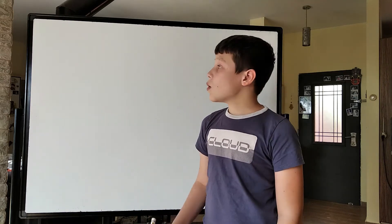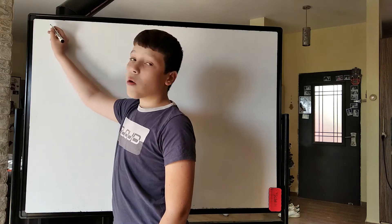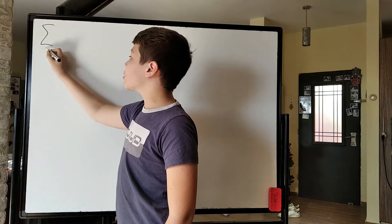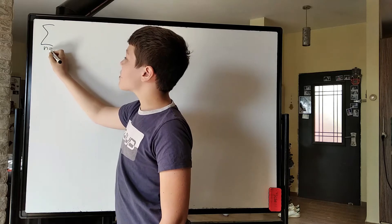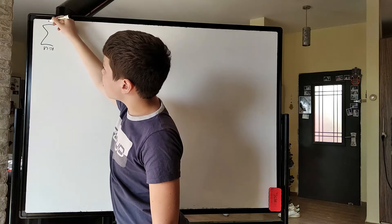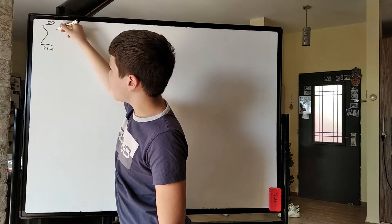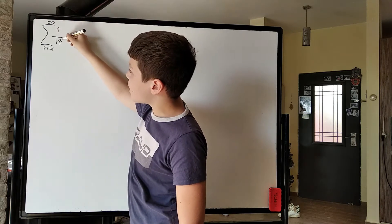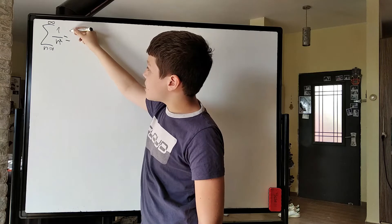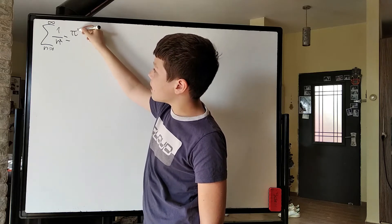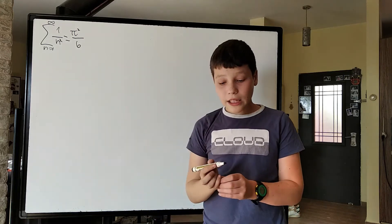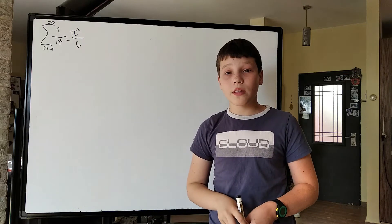Hello, welcome to this video. Today we are going to show how Euler solved the Basel problem — how Euler showed that the sum as n goes from 1 to infinity of 1 over n squared is equal to pi squared over 6. He was actually the first one to derive this formula.